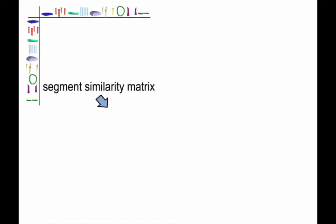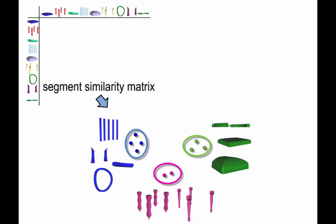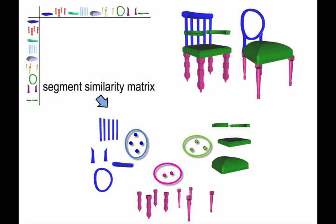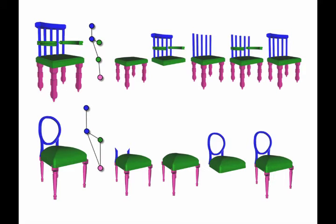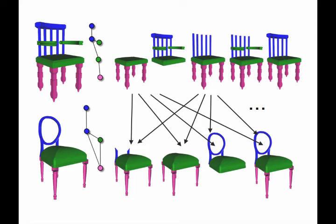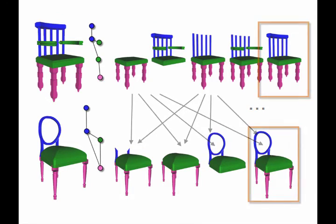In a gather stage, our algorithm groups individual segments based on the segment similarity matrix, using spectral clustering. Finally, consistent parts and their arrangements in each object is selected using an MRF formulation.